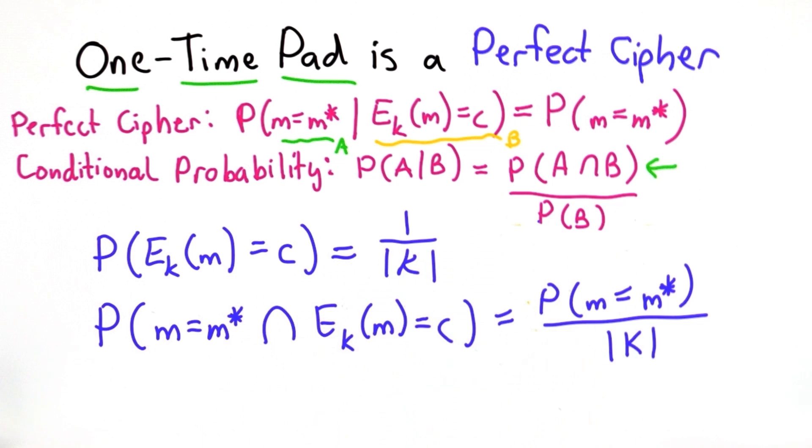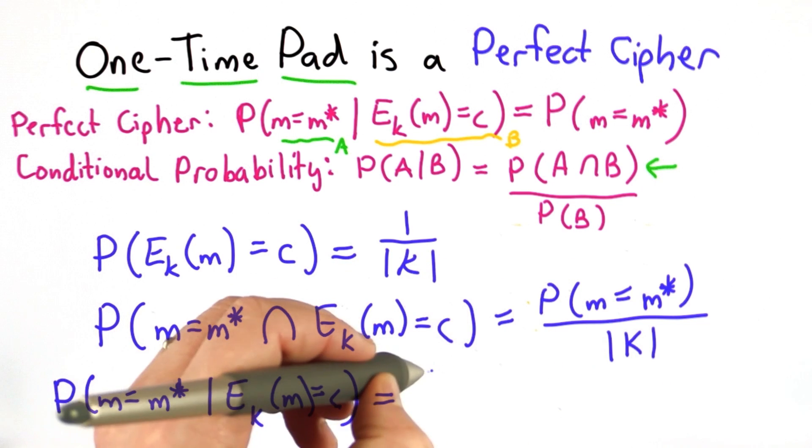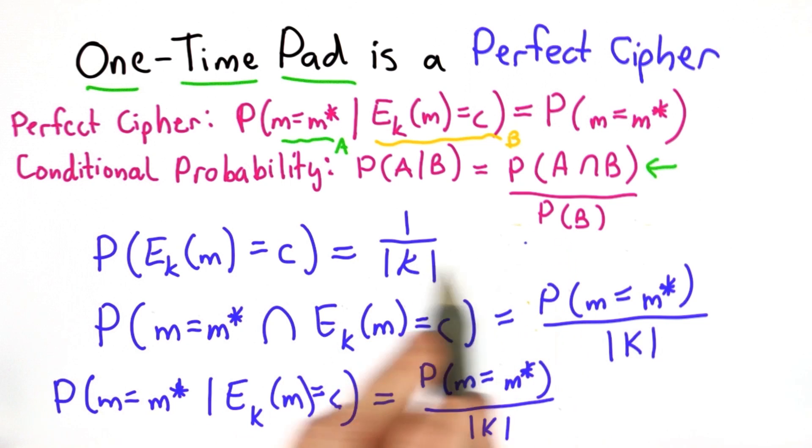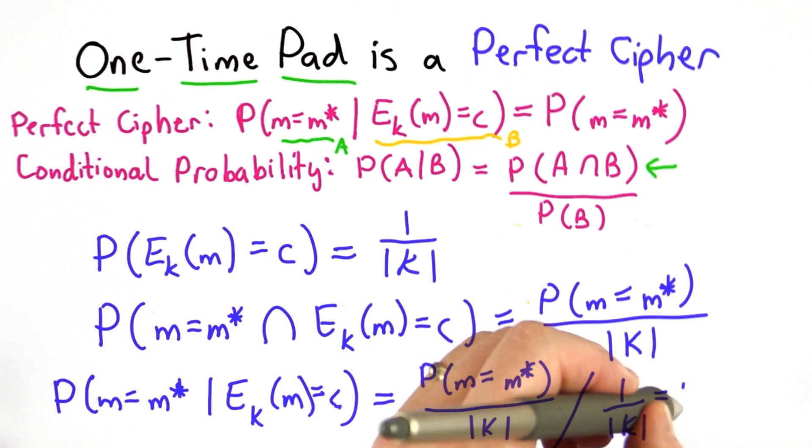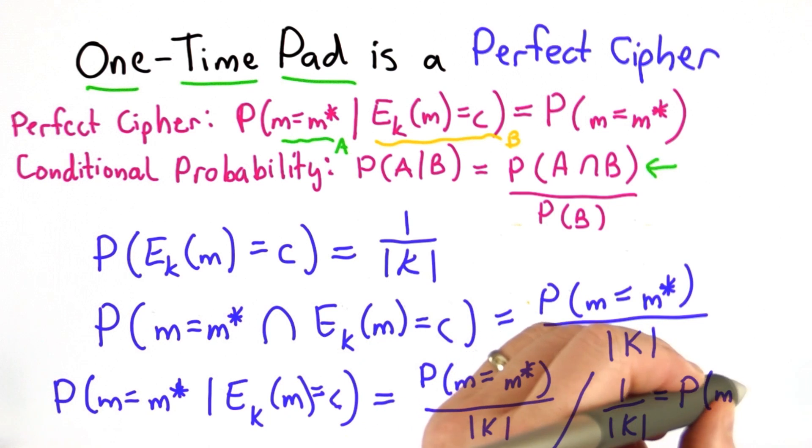So we've shown these two things. Now we just need to plug them into our conditional probability formula. We're going to have this on top, and we're going to divide that by the probability of b, which is 1 over k. The over k's will cancel out, leaving us with the probability that the message is equal to m star.